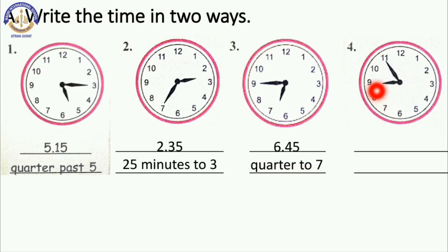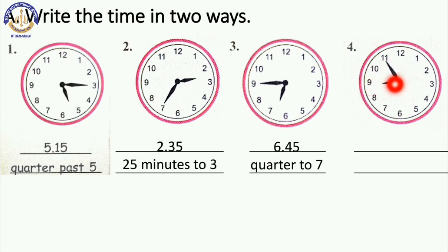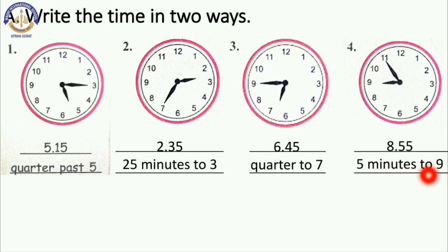Now children, here the hour hand is on 9 and the minute hand is on 11. Sorry children, the time is 8:55. And in words, 5 minutes to 9 — here 5 minutes are left for 9, so 5 minutes to 9. Write in your textbook.